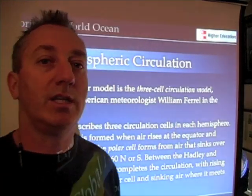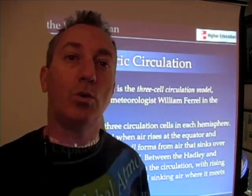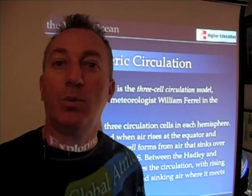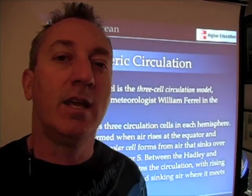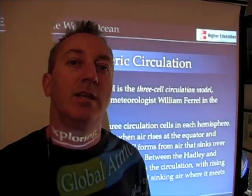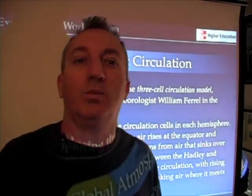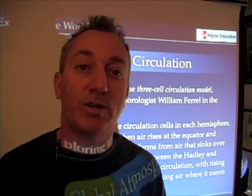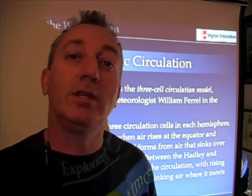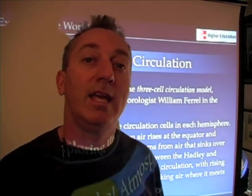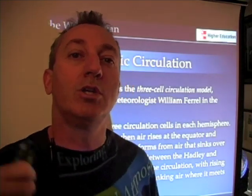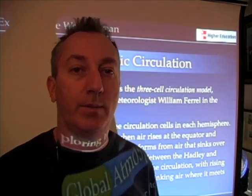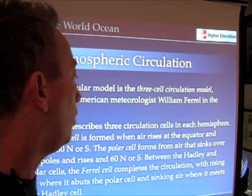Let's talk about the three-cell circulation model — the old-school way that the atmosphere circulates, still found in many textbooks. It's like the stick model of the atom: that model is never going away even though we know atoms don't really look like that. It's still a useful model for helping students understand how a particular phenomenon or process works.